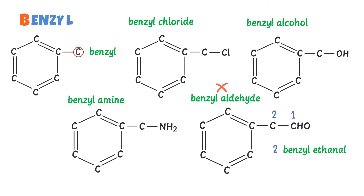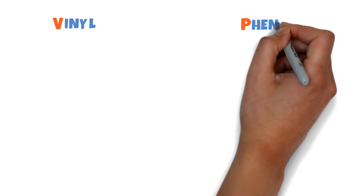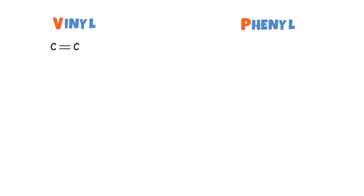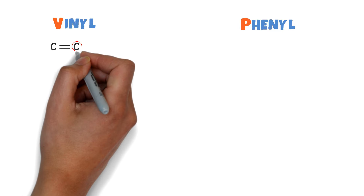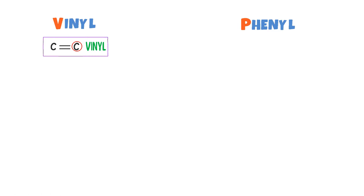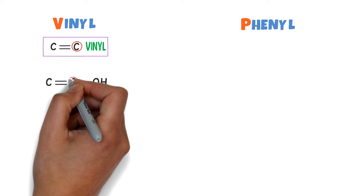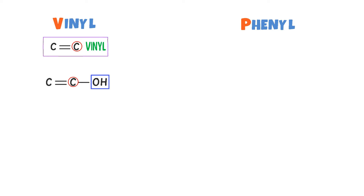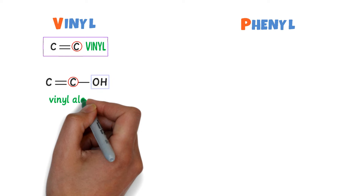Finally, the VS principle — Vinyl and Phenyl. Consider this organic compound: there is a double bond between these two carbons. The carbon directly on the double bond is called the Vinyl carbon. For example, consider this organic compound — here this is the Vinyl carbon, and the functional group OH is bonded to it. So I get Vinyl alcohol.